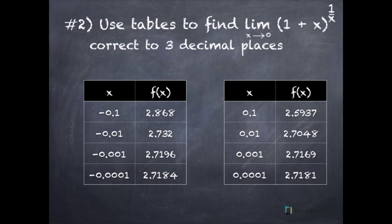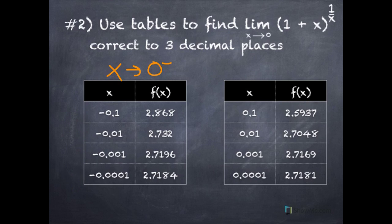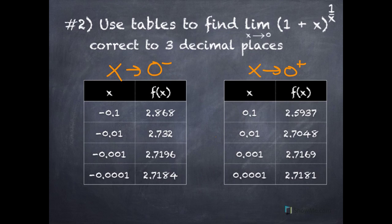Here's another similar example: use tables to find the limit of (1 + x)^(1/x) as x approaches 0, correct to 3 decimal places. From the left of 0, our x values are −0.1, −0.01, −0.001, −0.0001 — getting closer and closer to 0. From the right: 0.1, 0.01, 0.001, 0.0001. The y values are: 2.868, 2.732, 2.7196, 2.7184 — it's hard to tell what they're getting closer to.